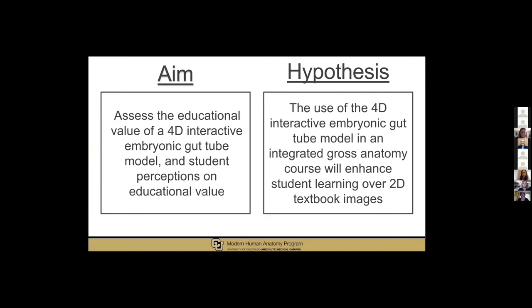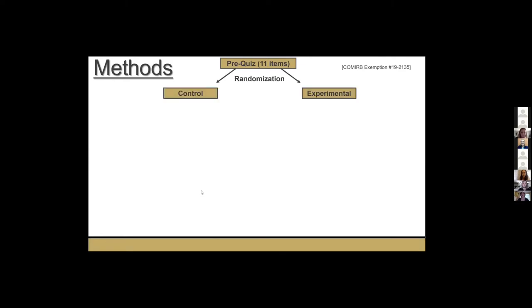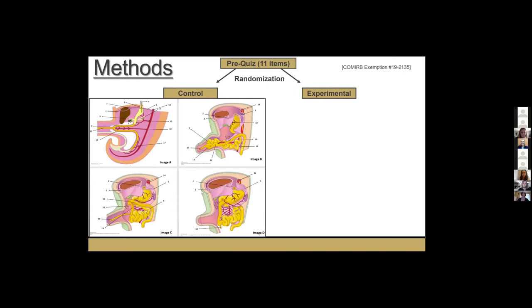Our hypothesis was that the use of the 4D interactive embryonic gut tube model in an integrated gross anatomy course will enhance student learning over the 2D textbook images. In a COM-IRB-exam randomized single blind study, 184 first-year medical students who had already completed their GI development content lecture were recruited, and our study was part of one of their active review sessions. All students took the same pre-quiz before interacting with their assigned resource and then were randomized into control and experimental groups and divided into teams of 6 to 8 students. Students in the control group were provided with a series of 2D embryology textbook images depicting gut tube development from week 4 to 12 with specific numbered structures.